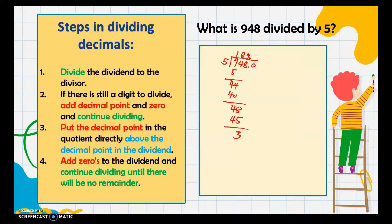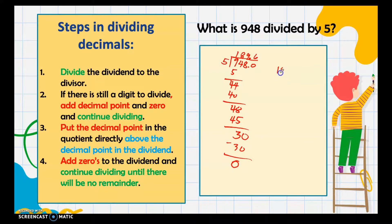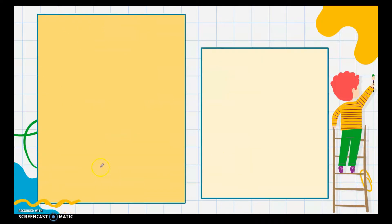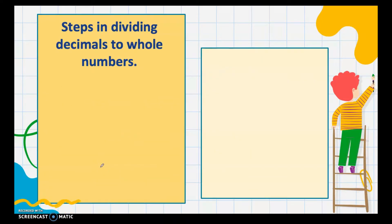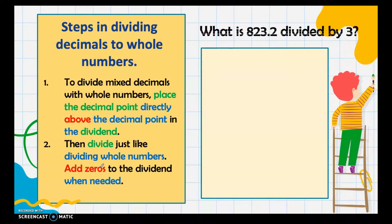We bring down the zero. Now we divide 30 by 5, which is 6, and 6 times 5 is 30 — no more remainder. Our answer is 189.6. Remember: add zeros to the dividend and continue dividing until there is no remainder.